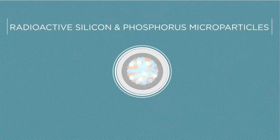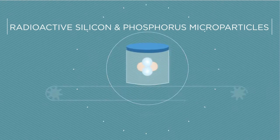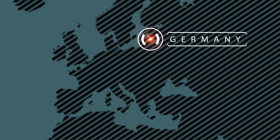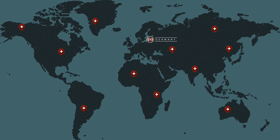Once the radioactive silicon and phosphorus microparticles have been activated, they are sent in shielded containers from the manufacturer in Germany around the world to hospitals where suitable patients with pancreatic cancer have been identified.